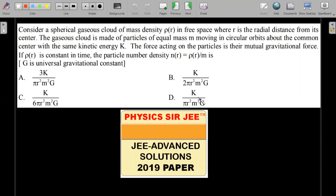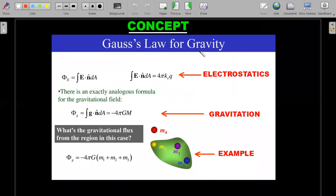He's asking what's the value of that number density function in terms of given parameters, where G is the universal gravitational constant. Let's start with the concept that I'm going to use. There are multiple ways of solving this problem, so I'll try to keep it as close to the JEE syllabus as possible.